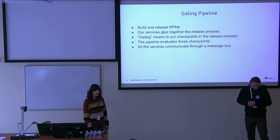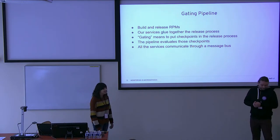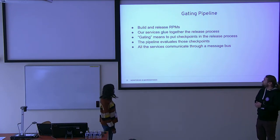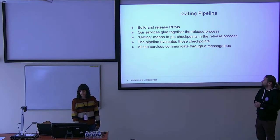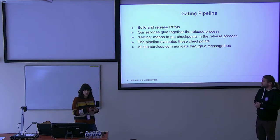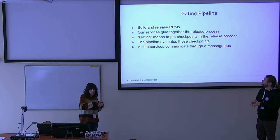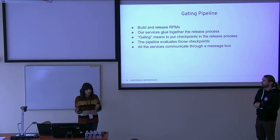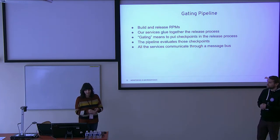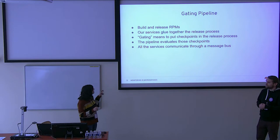The second branch is the gating pipeline. It's the process to build and release RPMs in Fedora and internally in Red Hat. You have many steps through the pipeline and you want tests between them, to be sure that your RPM or software artifact can go from one step to the next. Our services — the ones we implemented in Factory — make sure they can go to the next step.